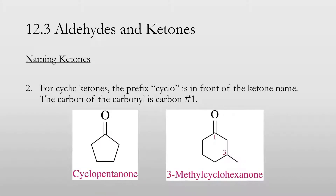For cyclic ketones, the prefix 'cyclo' is placed in front of the ketone name, and the carbon of the carbonyl is carbon number one. The picture on the left shows cyclopentanone, and the picture on the right shows 3-methylcyclohexanone — it's a cyclohexane ring where the carbonyl is at carbon one and the methyl group is at carbon three.